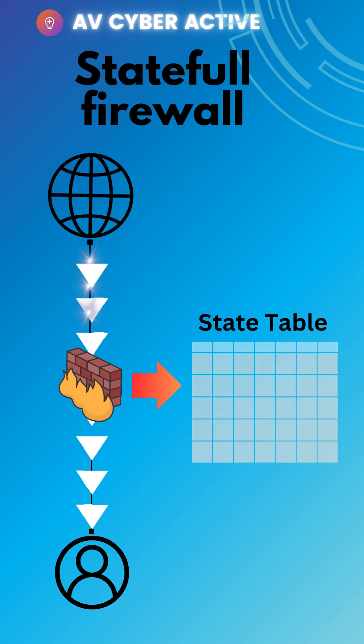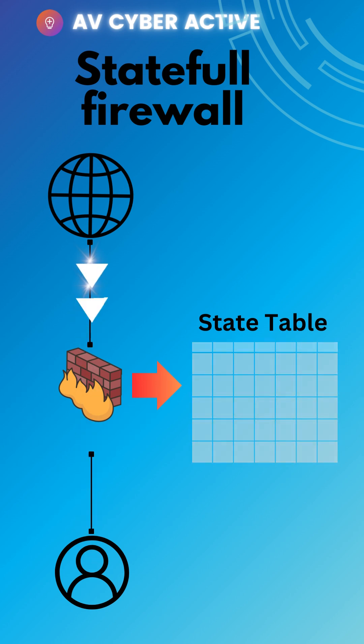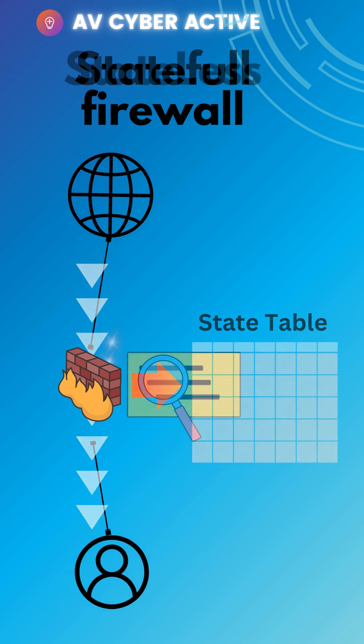For example, it can allow incoming traffic if it's a response to an outbound connection initiated from within the network.